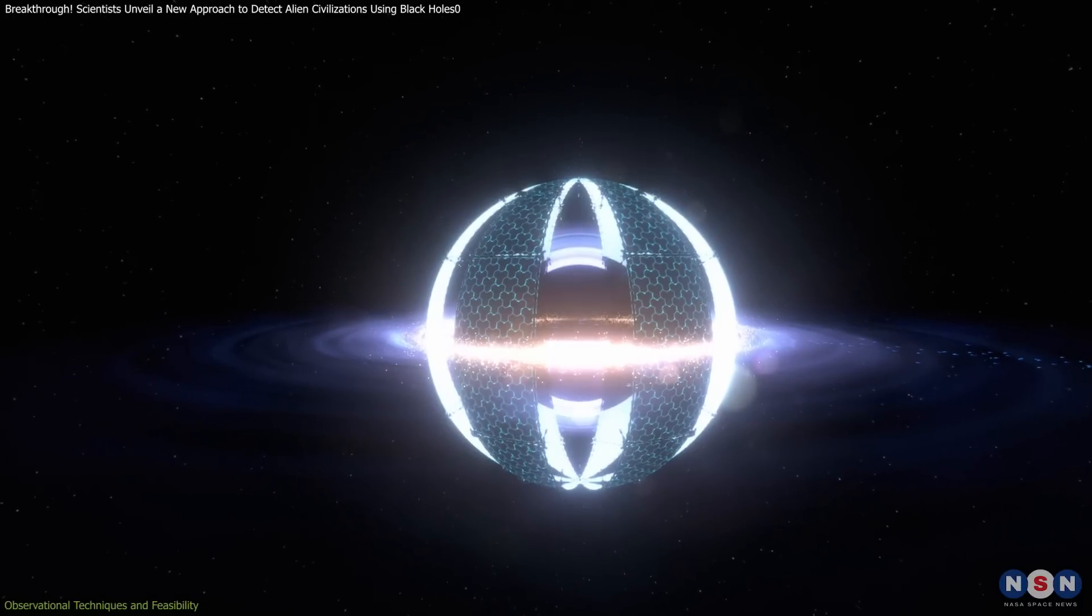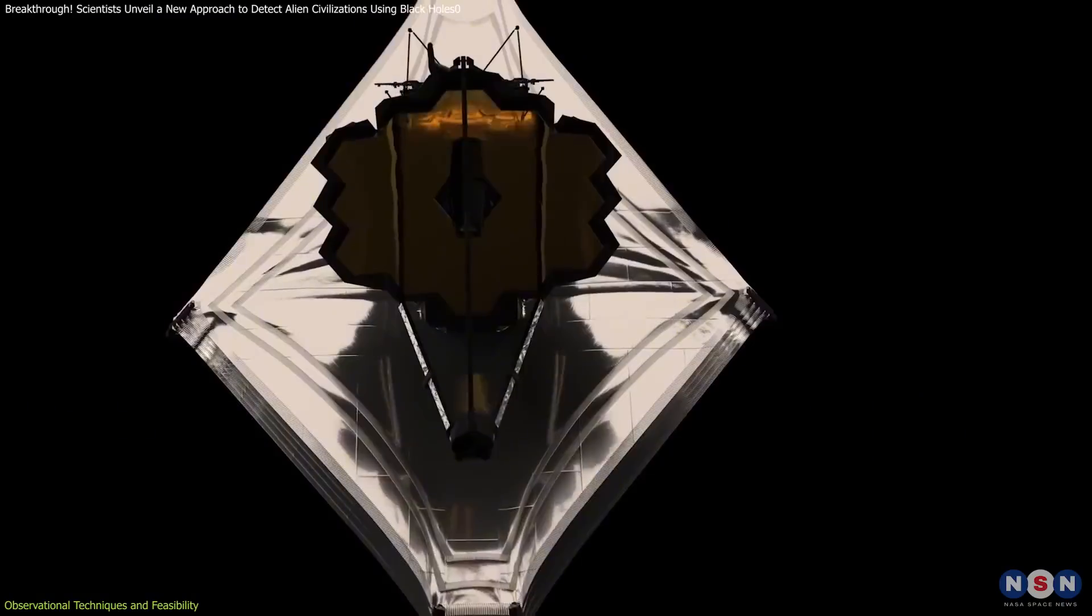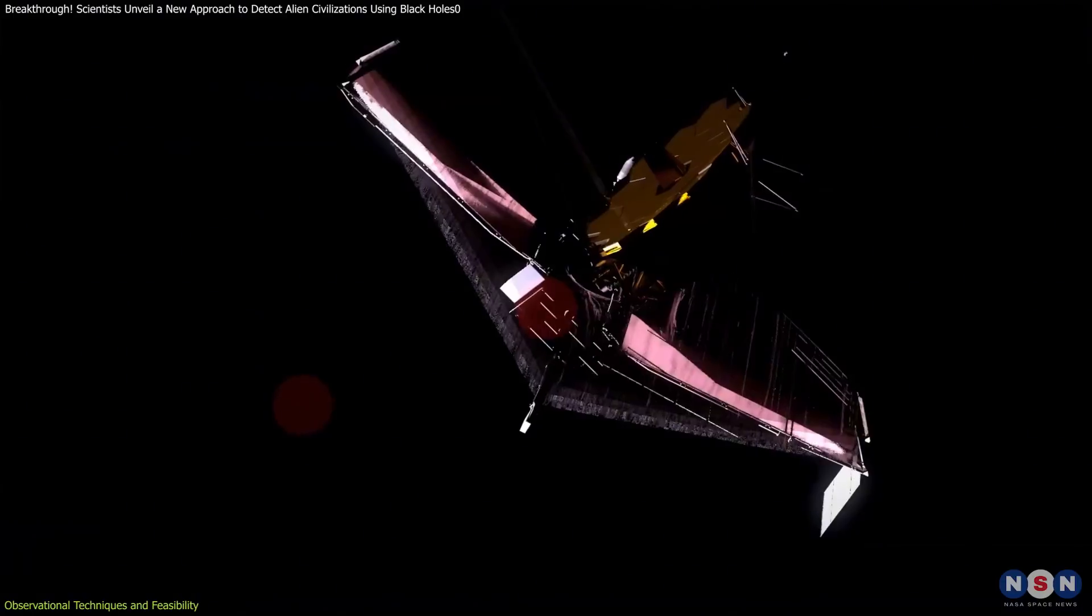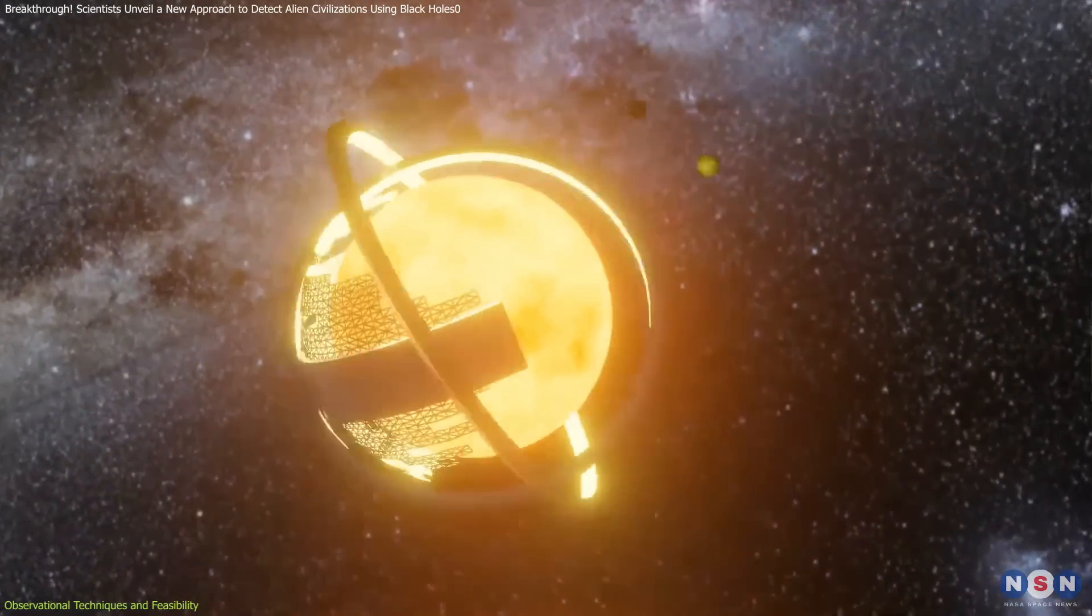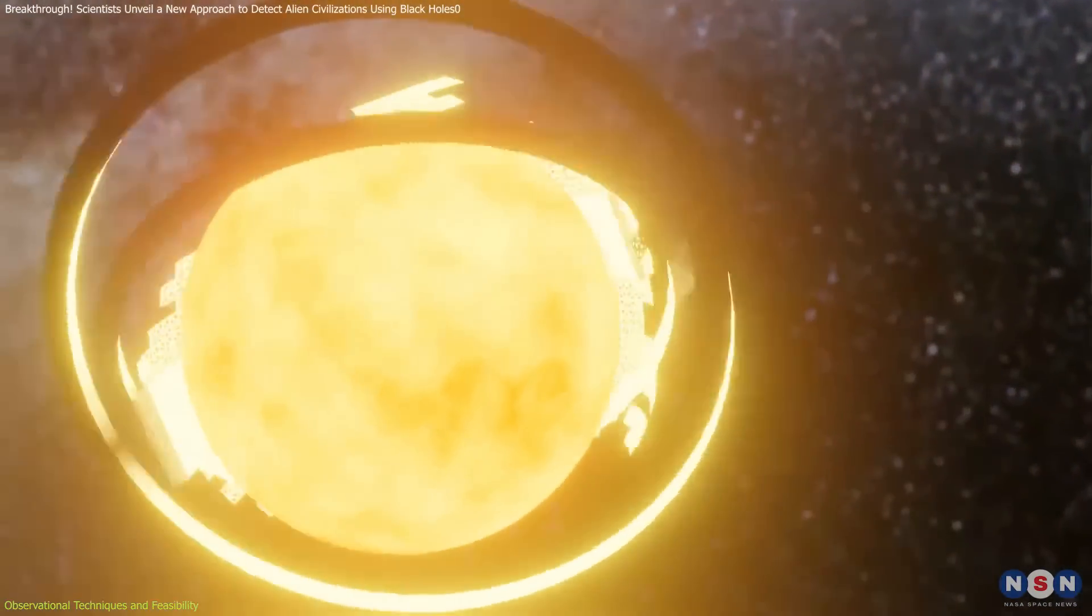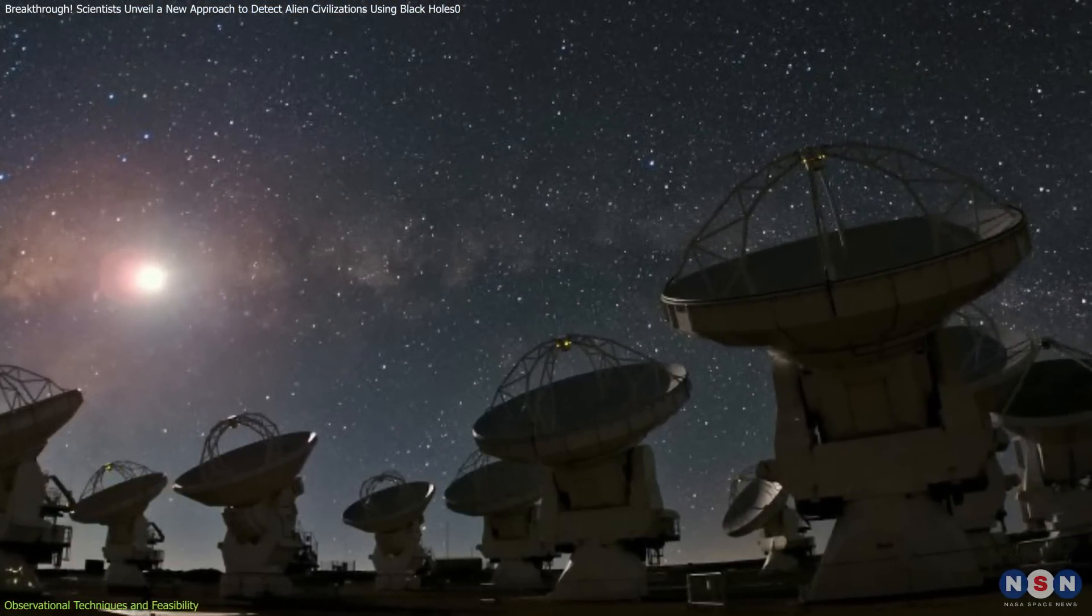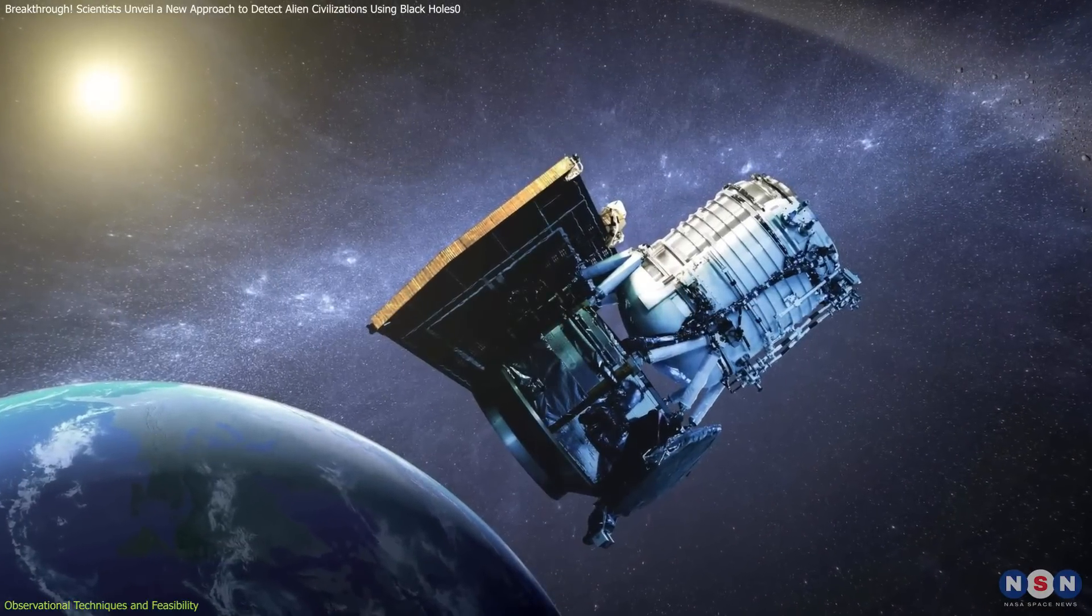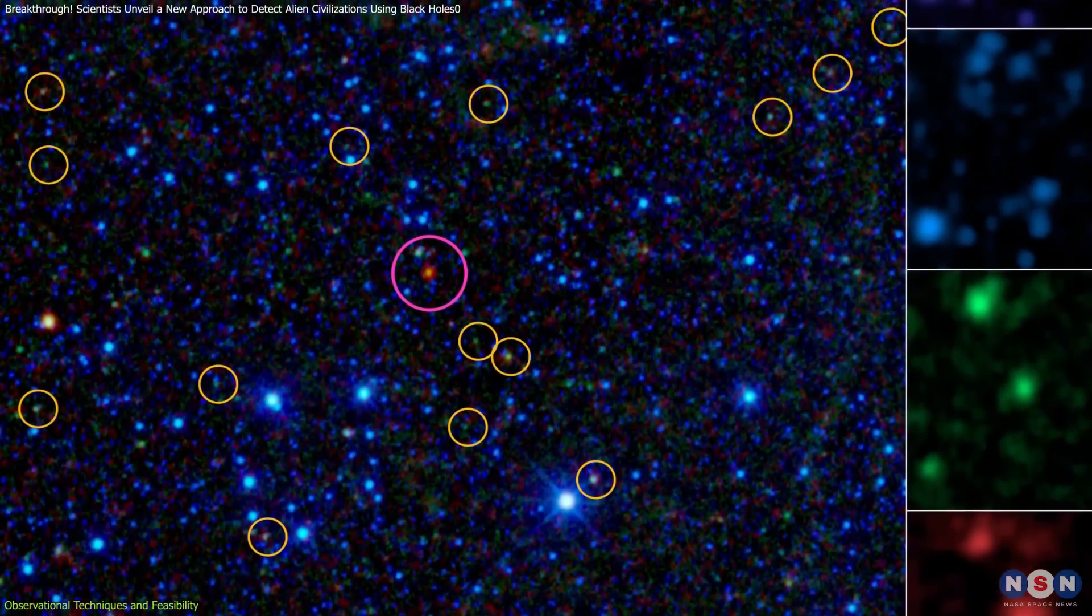To detect Dyson spheres around black holes, scientists must rely on advanced observational tools and techniques. Infrared astronomy plays a central role in this search. If such structures exist, they would emit excess infrared radiation due to waste heat. Instruments like the Atacama Large Millimeter Submillimeter Array ALMA and the Wide Field Infrared Survey Explorer WISE are well equipped to detect these infrared signals.